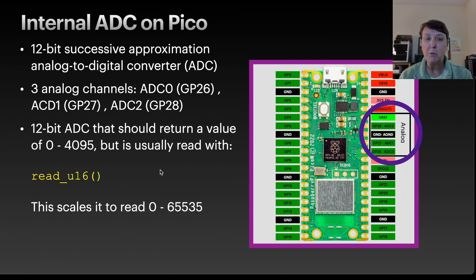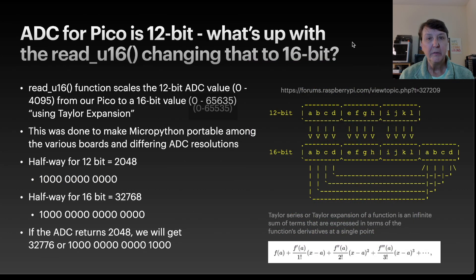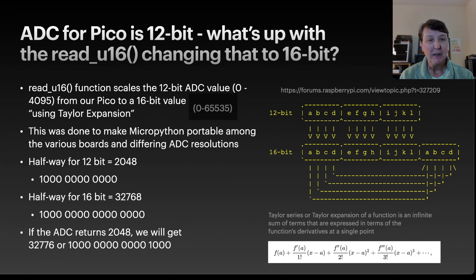It's 12-bit, which means it should return a value of 0 to 4,095. But we read it with the function read_u16, which actually scales it into a 16-bit number. That little difference between 12-bit and 16-bit was really bothering me, and I wanted to understand why we're using a 16-bit read function when we're only getting 12-bit of resolution from our ADC.